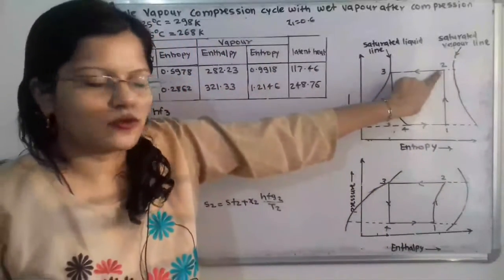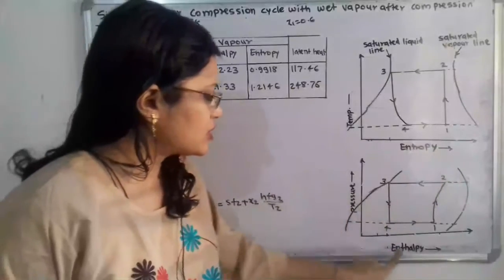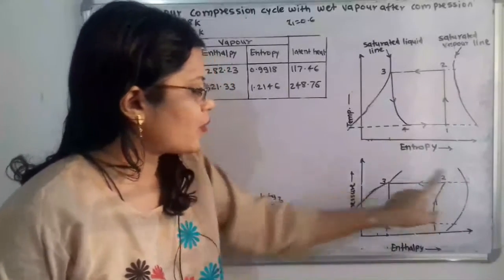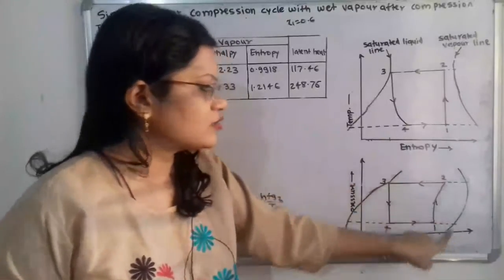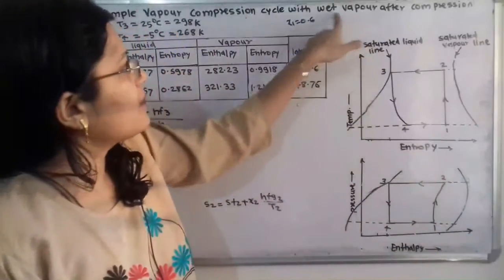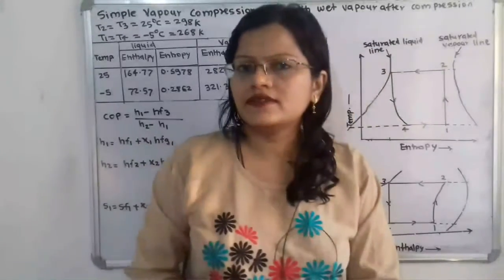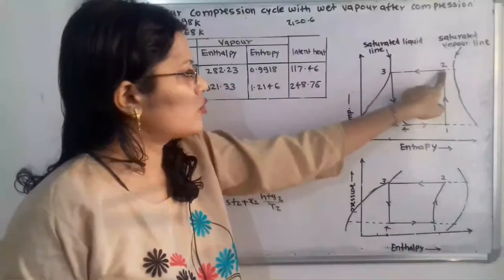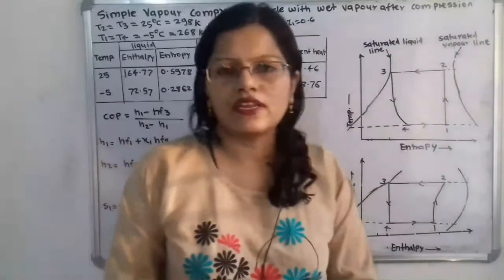So point 2 lies between the saturated liquid line and the saturated vapor line on the temperature-entropy diagram. In the same way, for the pressure-enthalpy diagram, point 2 must be shown between the saturated liquid line and the saturated vapor line, because there is wet vapor — that is, vapor containing liquid droplets.